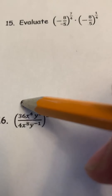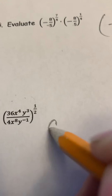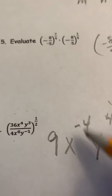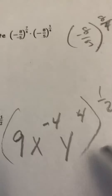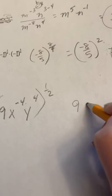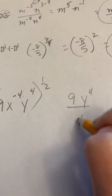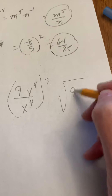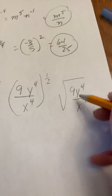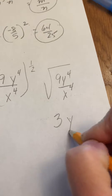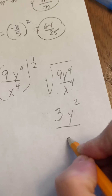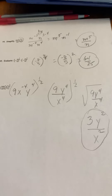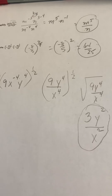This looks tough but it's not. I always start on the inside: 36 divided by 4 is 9. Subtracting the exponents gives negative 4 for x and positive 4 for y, all to the one half. Move the negative exponent to the bottom to get 9 y to the power of 4 over x to the power of 4. Now take the square root: square root of 9 is 3, square root of y to the 4 is y squared, square root of x to the 4 is x squared. Final answer: 3y squared over x squared. Go back and check your work!